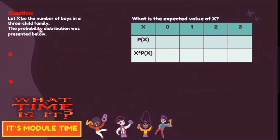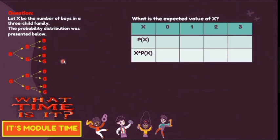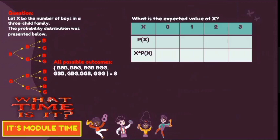In this situation, we have a 3-child family. For each child, it could be a boy or girl. Using the illustration, the possible outcomes are: Boy-Boy-Boy, Boy-Boy-Girl, Boy-Girl-Boy, Boy-Girl-Girl, Girl-Boy-Boy, Girl-Boy-Girl, Girl-Girl-Boy, and Girl-Girl-Girl. The sample space is equal to 8.